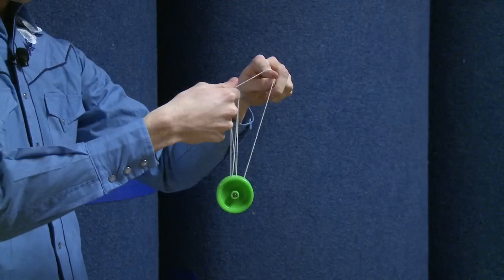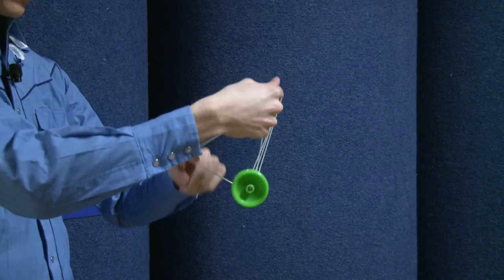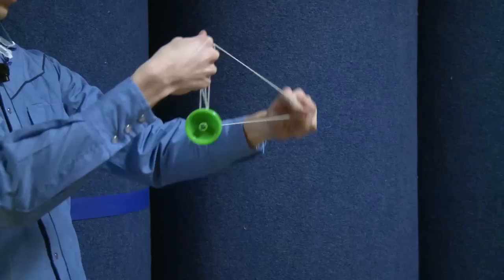But for Spin Blaster you do a Mach 5. So you do an underpass with your free hand, and then an overpass until it's bound.